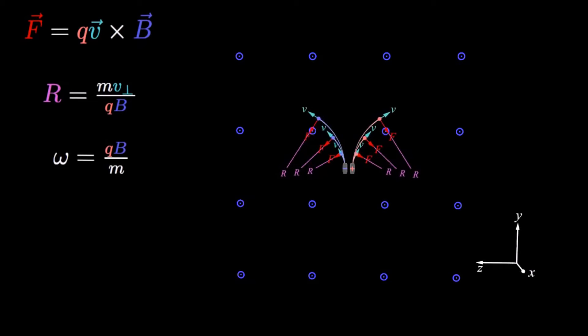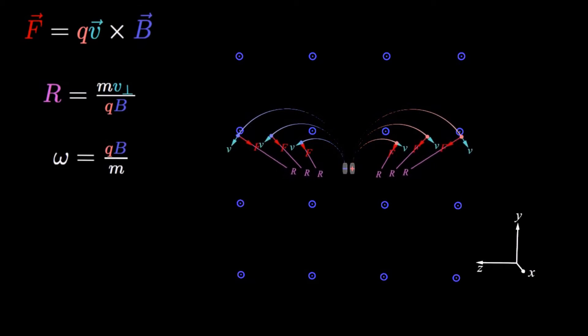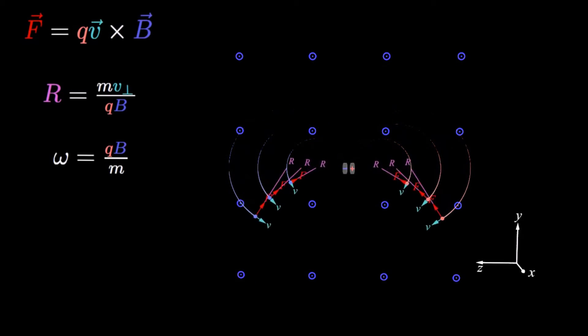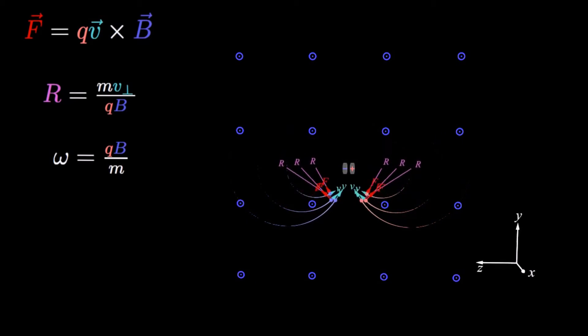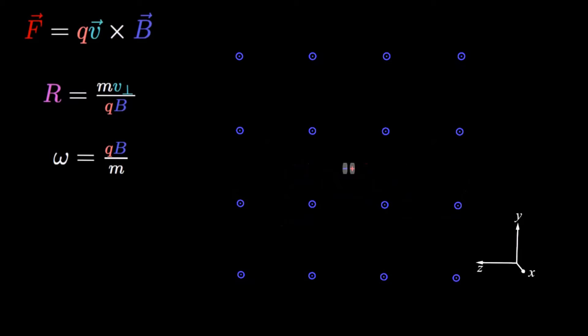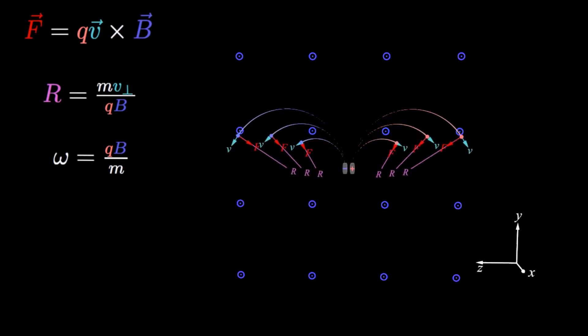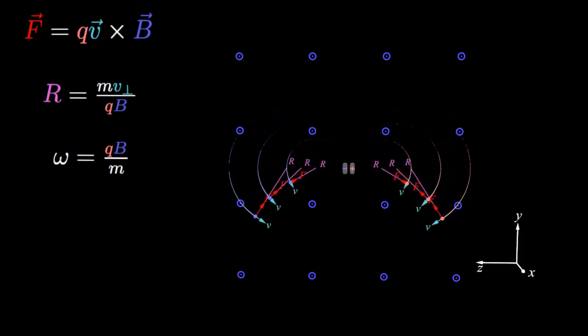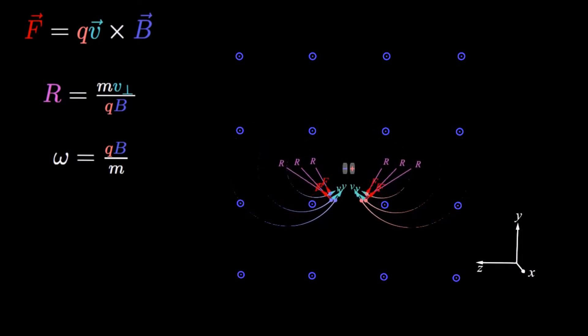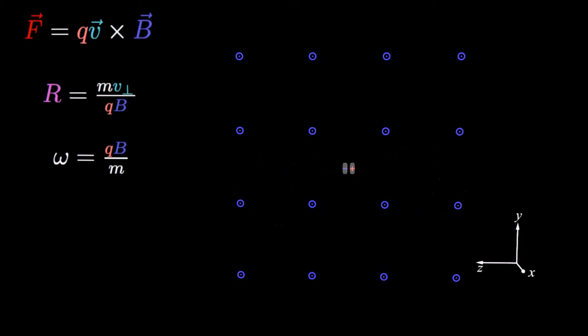Speed also affects the radius of the circular motion. However, the time it takes is not affected by the speed. The frequency of the orbits only depends upon the charge, the magnetic field strength, and the charge's mass.